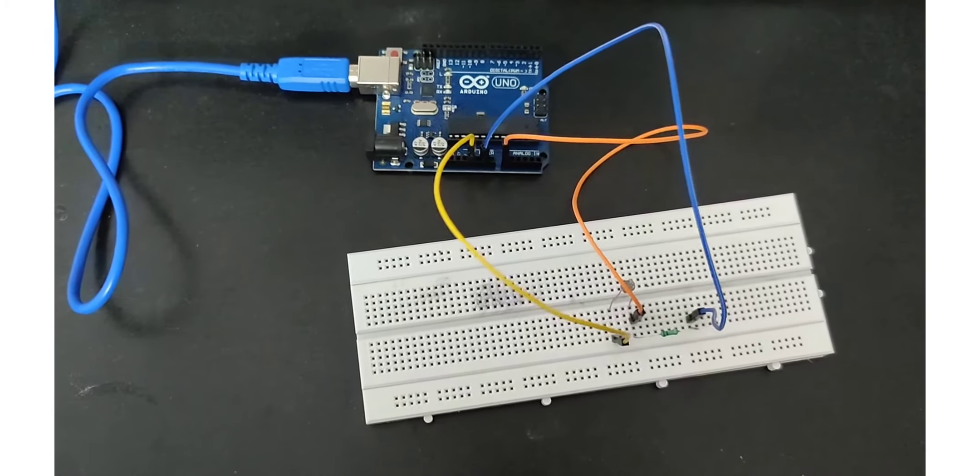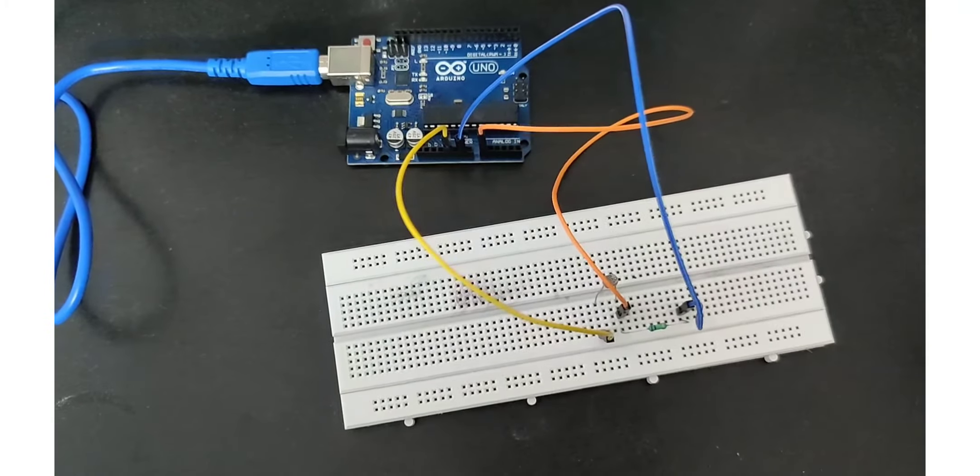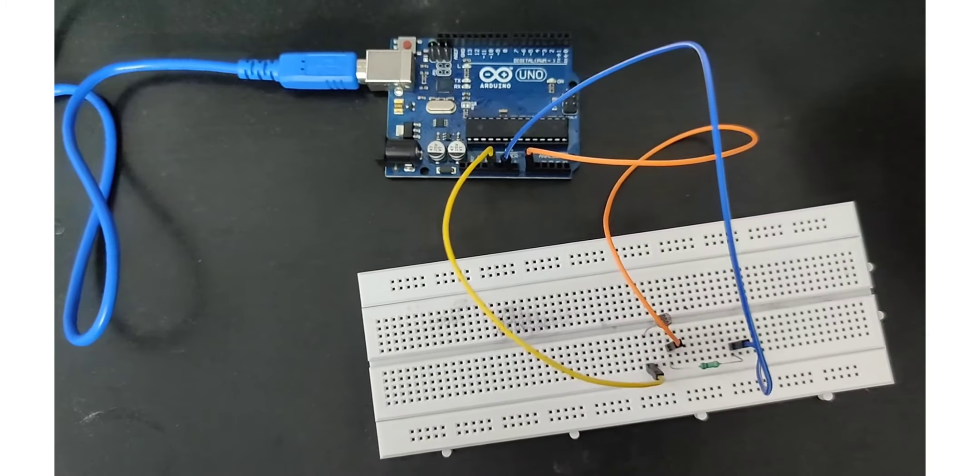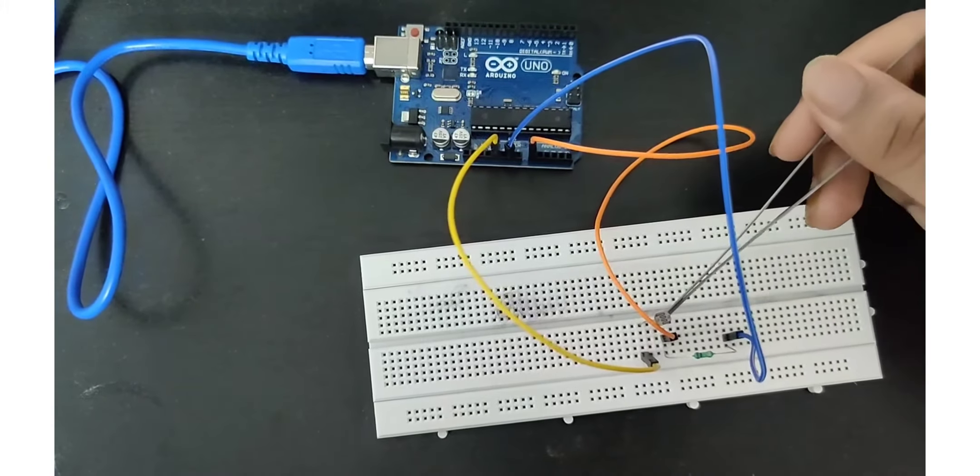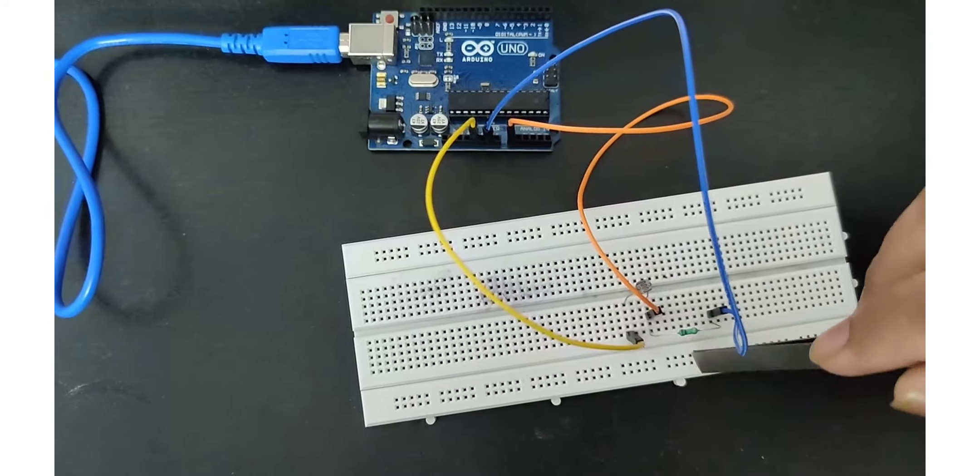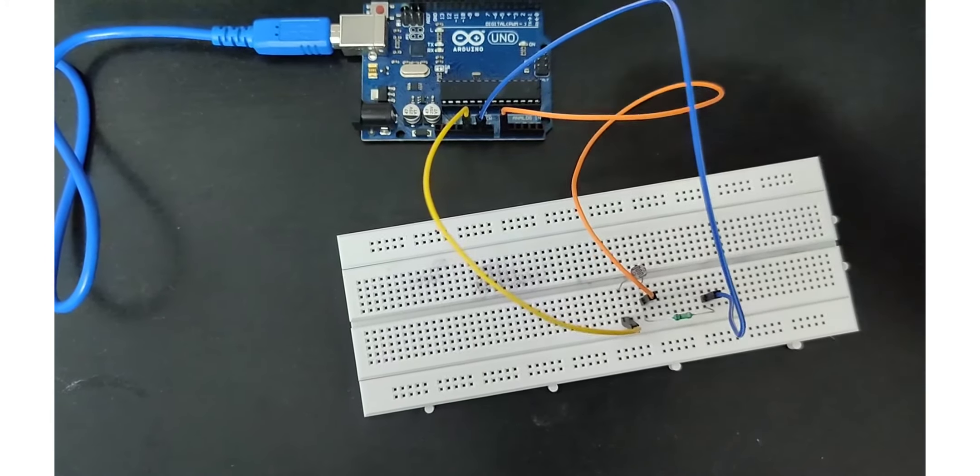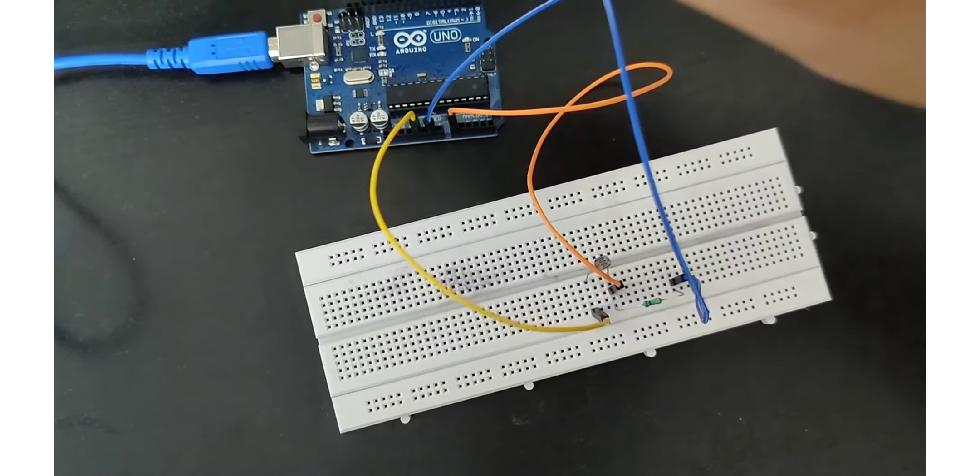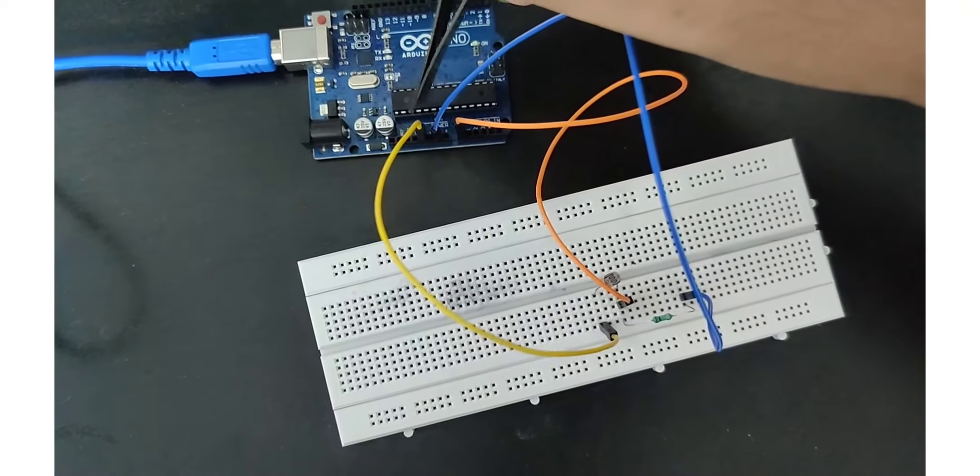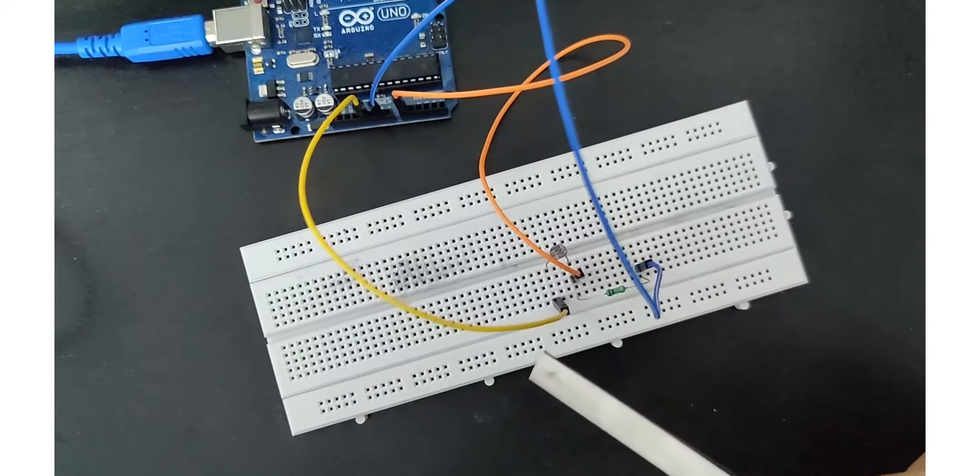Hello everyone, I have already connected the circuit. The main components are the LDR, a 100 ohm resistor, and an Arduino board. The 5 volts of the Arduino board is connected to one terminal of the LDR.